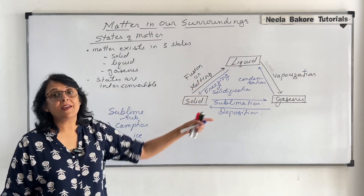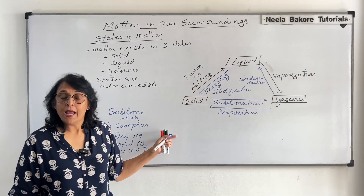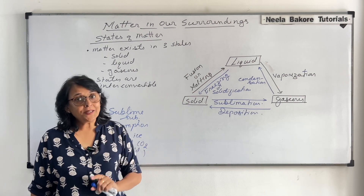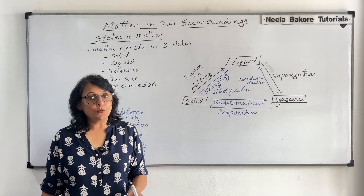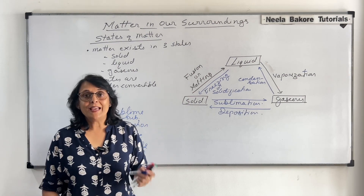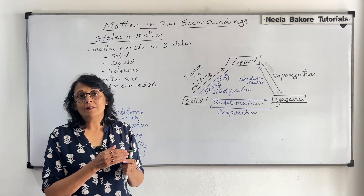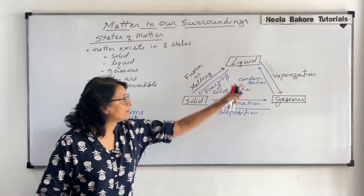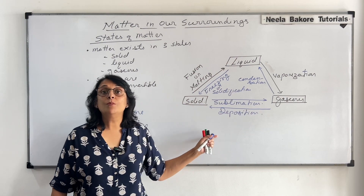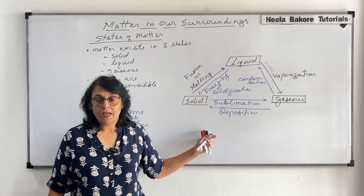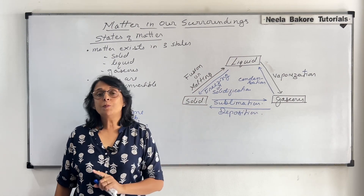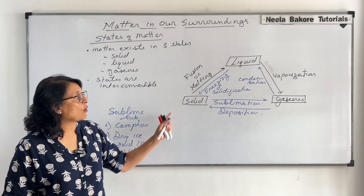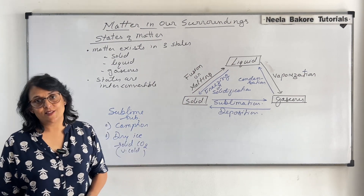These terms are very important and help us understand that there are three states of matter which are interconvertible — we can change one state into another. Solid into liquid is melting; liquid back to solid is freezing or solidification; liquid into gas is vaporization, commonly also called evaporation; gas into liquid is condensation; solid directly to gas is sublimation; and gas directly to solid is deposition. In the next part, we will take the properties of solid, liquid, and gases.